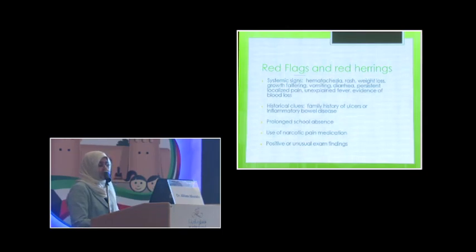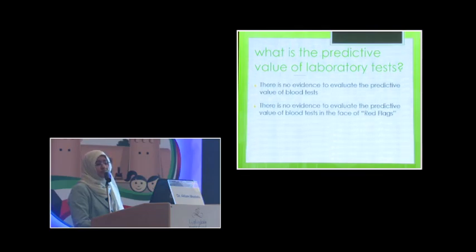Your initial evaluation would be toward identifying organic pathology and screening for it prior to testing. You want to validate the symptoms for yourself and the family. Red flags and red herrings are very important: family history of ulcers, inflammatory bowel disease, patients with positive unusual exams, patients who started using narcotics for pain, along with systemic signs and symptoms.